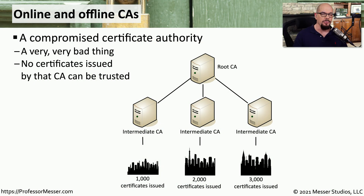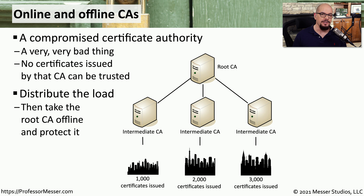If you're managing a certificate authority, one of the things you do not want to have happen is to have someone compromise your CA or any of the keys associated with your CA. That means any keys signed or distributed by that CA would no longer be trusted in your organization. To limit this type of exposure, we can have some CAs act as online CAs, and other certificate authorities might be offline CAs.